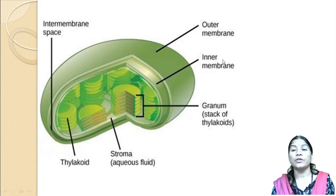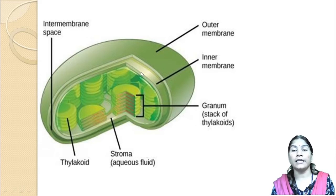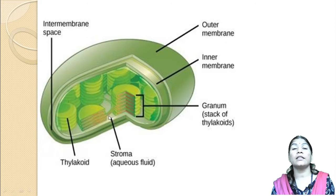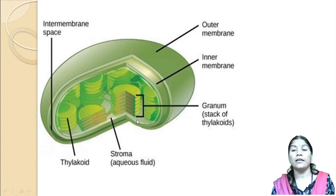These pictures show the ultrastructure of the chloroplast, which is a double membrane structure. In between the outer and inner membrane there is the inter-membrane space. The fluid-like matter inside is the stroma, and the stacks of thylakoids are called the granum.